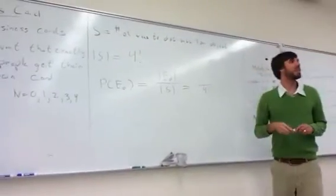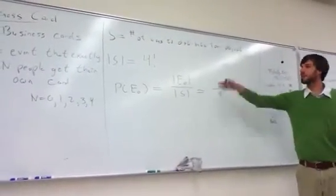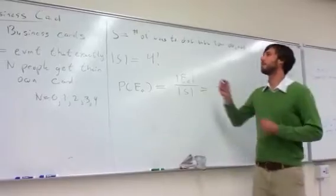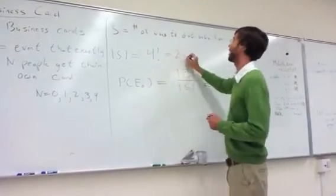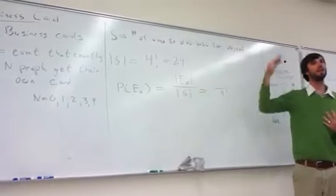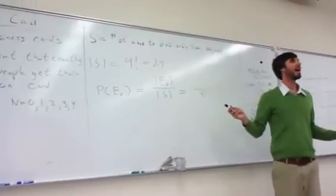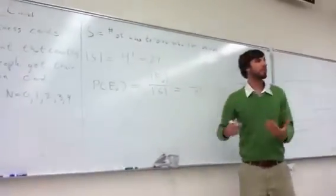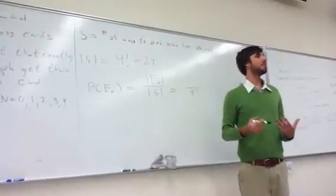Now to calculate the size of E naught, you can write down the whole sample space. There's only 24 possible options, it wouldn't take you that long, and that's what I would recommend to do if you had no other ideas, and then just count how many of those lead to no one getting their own card. Now if you don't want to do that, if you can see what the trick is...